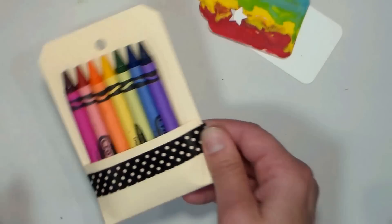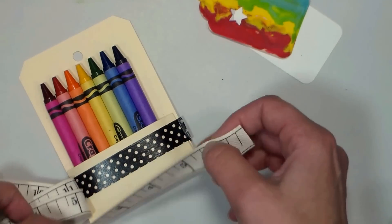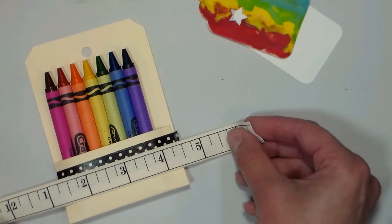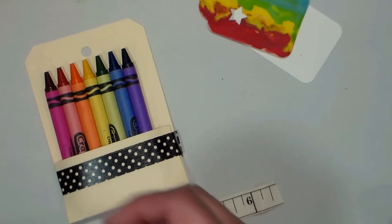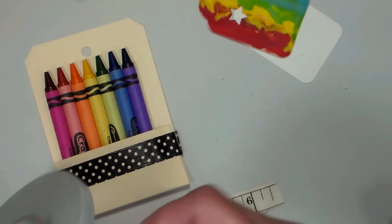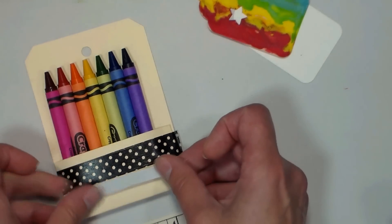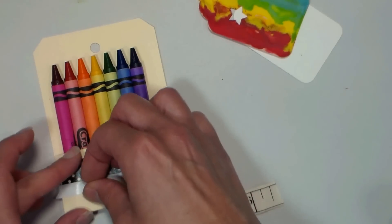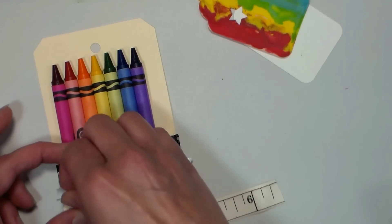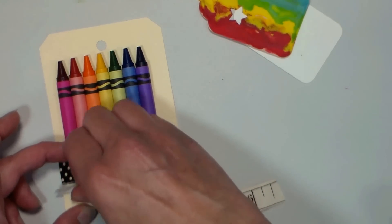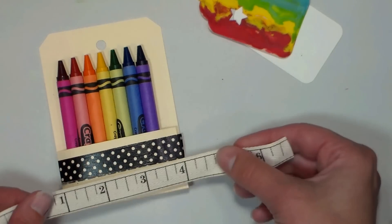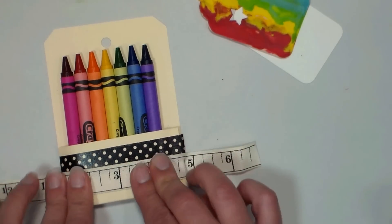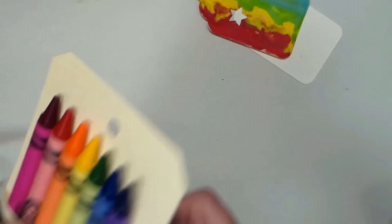And then I thought it'd also be cute to use this measuring tape ribbon, so I just wanted a little bit, I wanted it big enough to go all the way around. And I'm going to use some of this double stick tape. I like it because I can tear it, and I will just peel off the backer there.